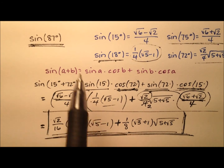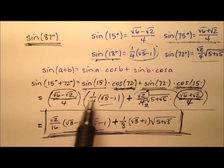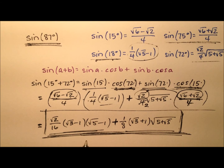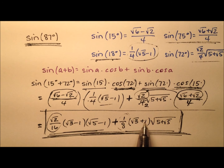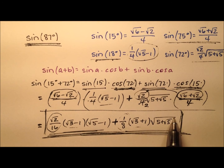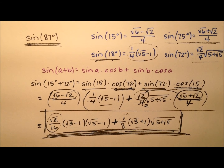So the exact value for the sine of 87 degrees is this expression — a sum of irrational numbers. The reason for factoring out the square root of 2 is to keep the fraction out front clean: square root of 2 over 16 and one-eighth. Notice the nice pattern with square root of 3 minus 1 and square root of 3 plus 1, as well as the square root of 5 minus 1 trailing value. You'll see many such patterns across these videos.